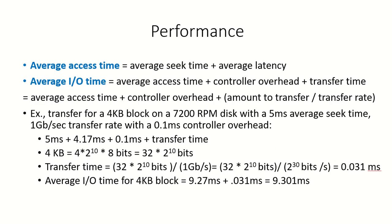What is the performance of the hard disk — how much time will be taken to transfer data from it? The average access time is the average seek time plus the average latency. This is the time taken to access a particular sector: first we go over that track (seek time), then we go over that sector (average latency). Together, these give us the average access time.